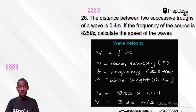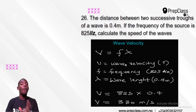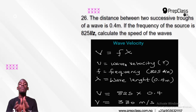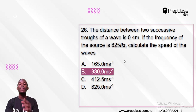Now in the question, I was given my frequency as 825 Hz. My wavelength is 0.4 metres — the distance between successive troughs or successive crests is the wavelength, and that was 0.4 metres. So plugging them into the formula: V = F × λ = 825 × 0.4 = 330 metres per second, which is the speed of sound. That is the answer to the question: 330 metres per second.